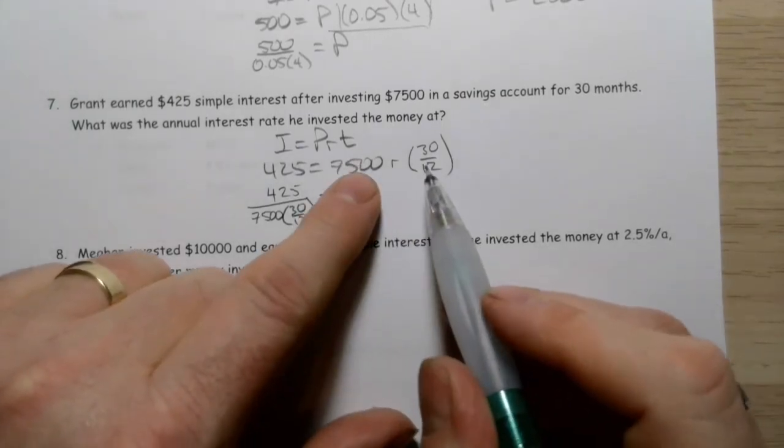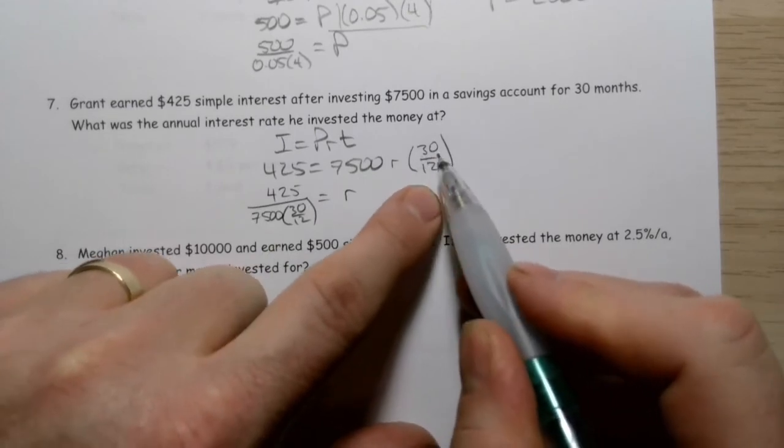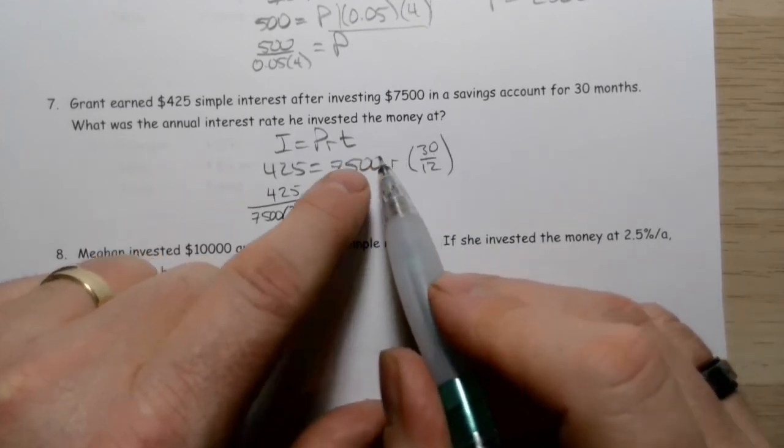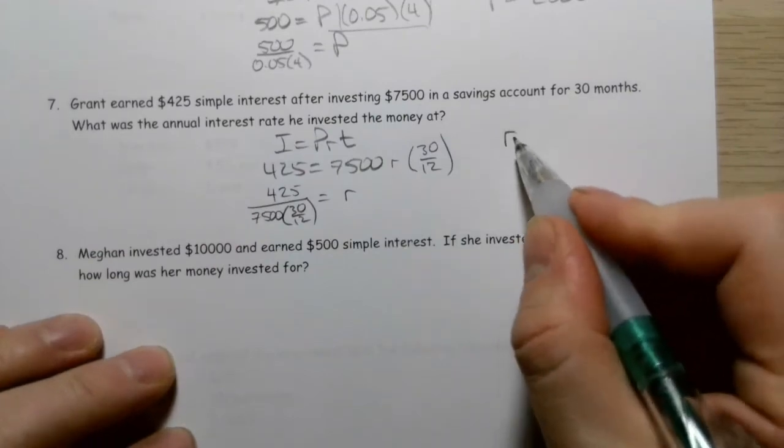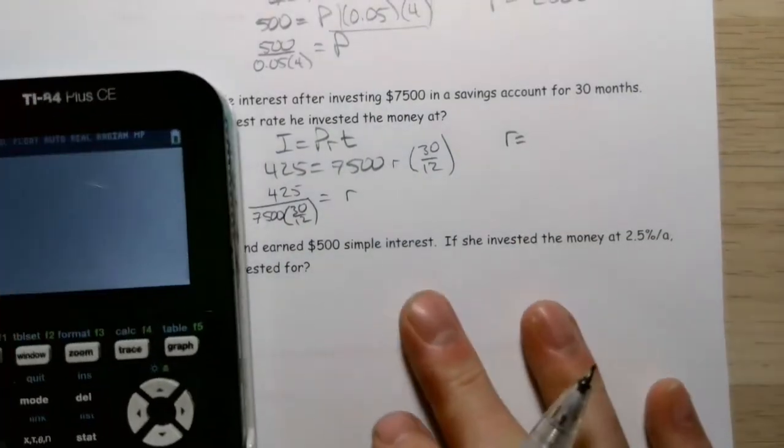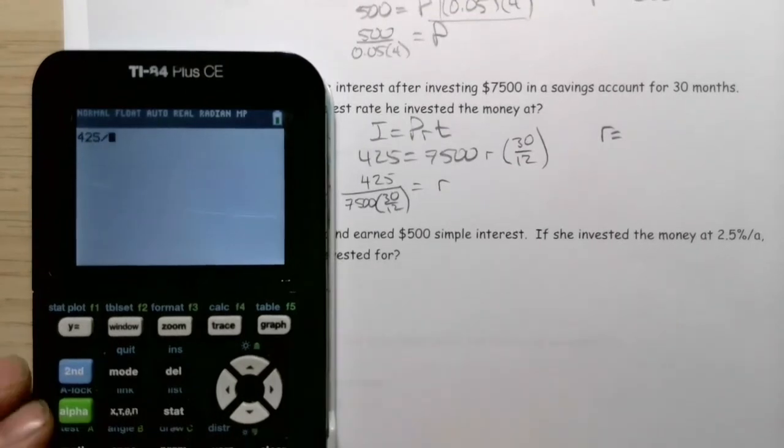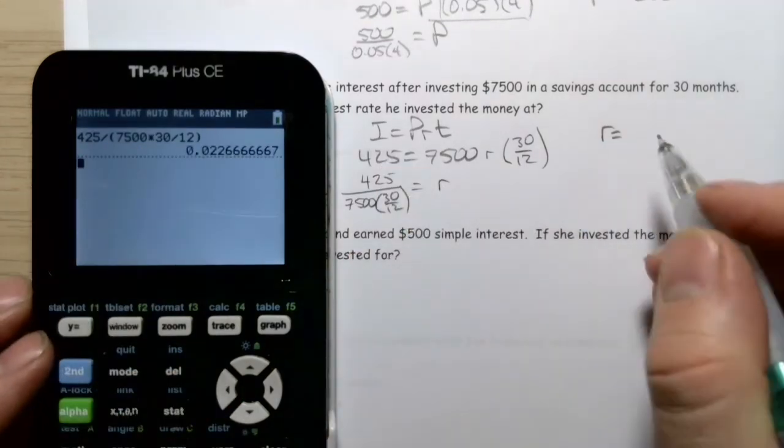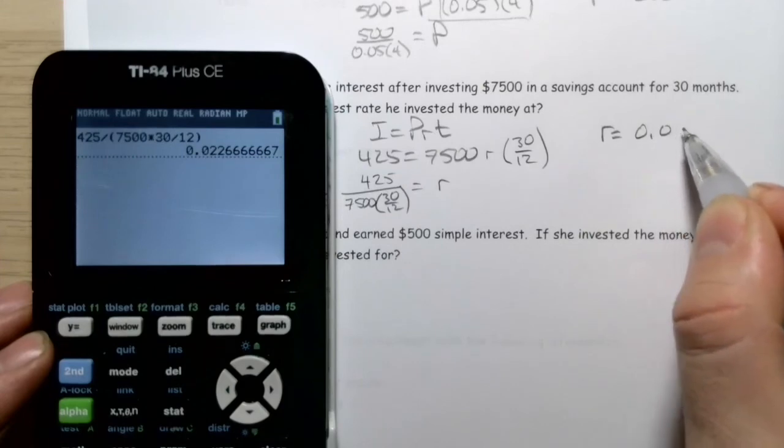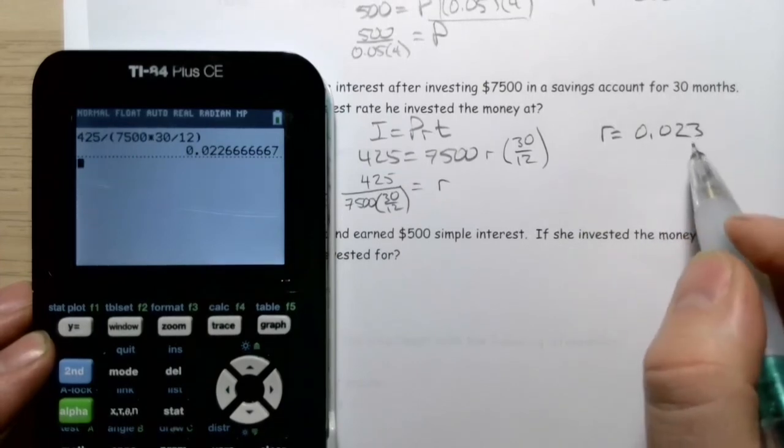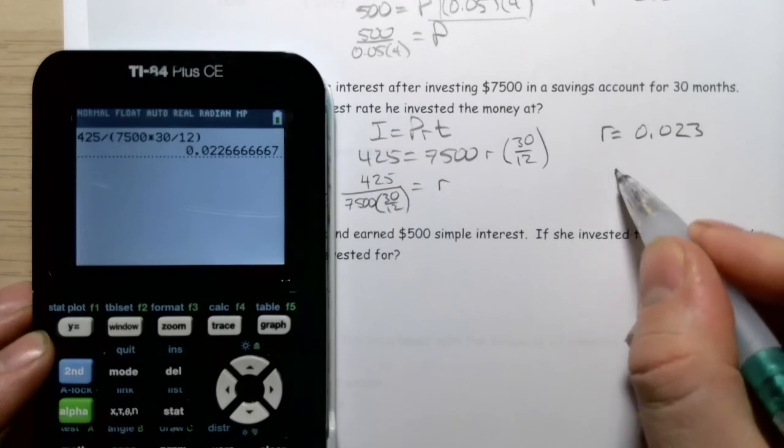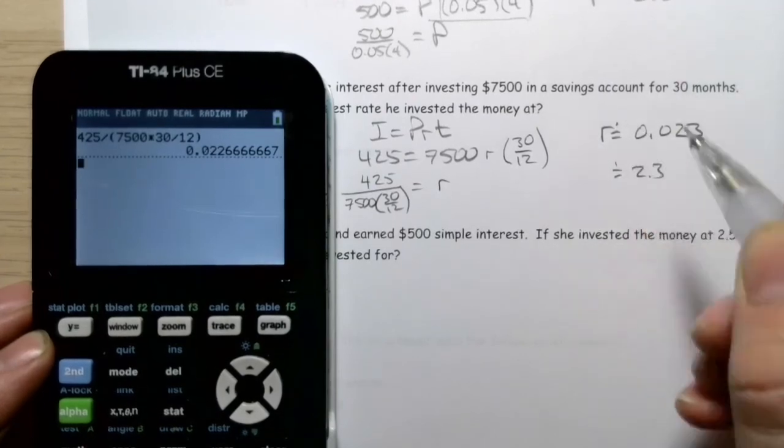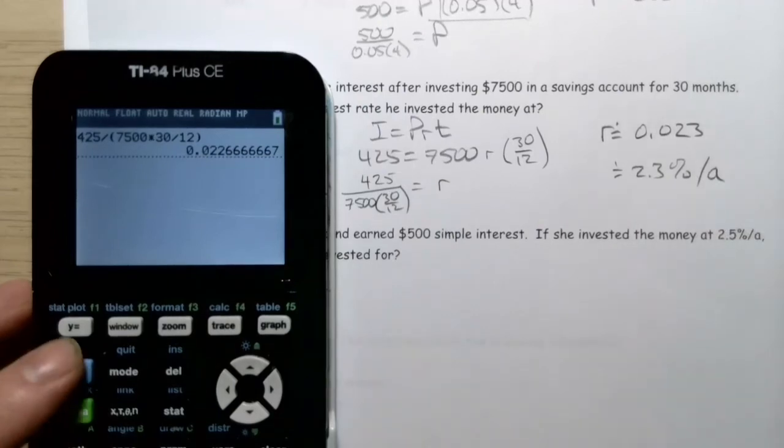On my calculator, that's 425 divided by, in parentheses, 7,500 multiplied by 30 divided by 12. Close the parentheses for the whole denominator. I get 0.023 when I round to the nearest thousandth, which means we're looking at approximately 2.3% per annum.